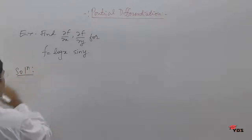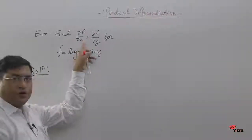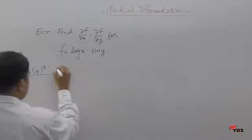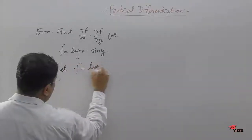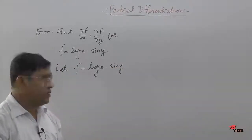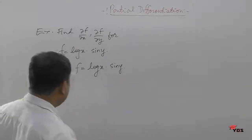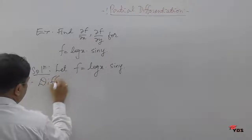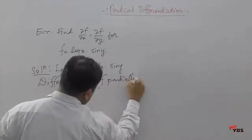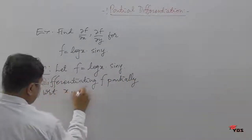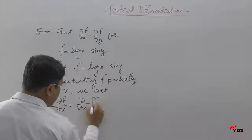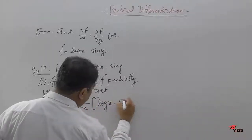We consider the first order partial derivatives. This is the partial derivative of f with respect to x, and this is the partial derivative of f with respect to y. We need to understand that f is equal to log(x) times sin(y), and now we want to find the partial derivative of f with respect to x. So we differentiate f partially with respect to x, giving us ∂f/∂x equal to ∂/∂x of log(x) times sin(y).